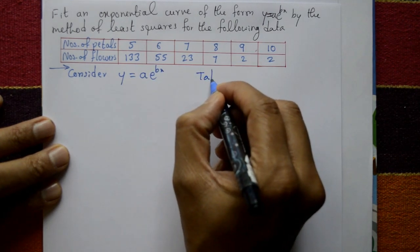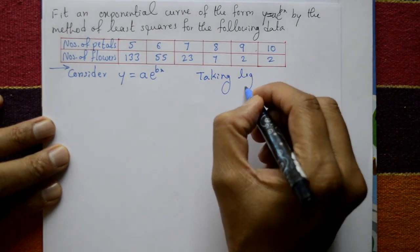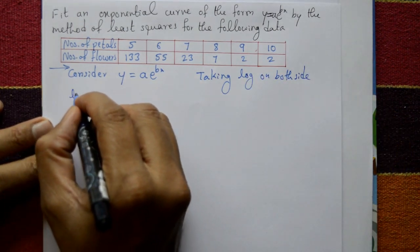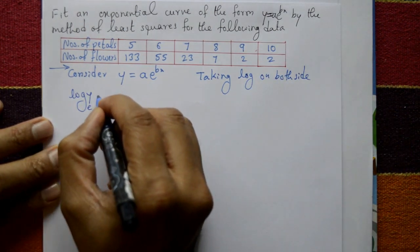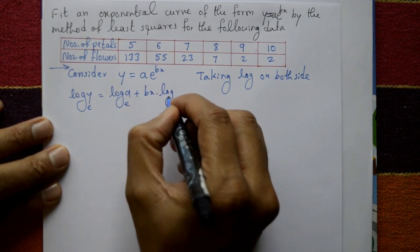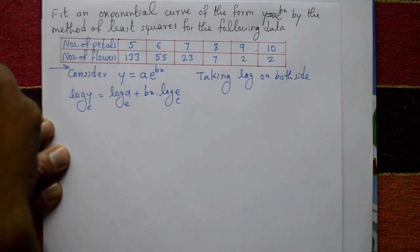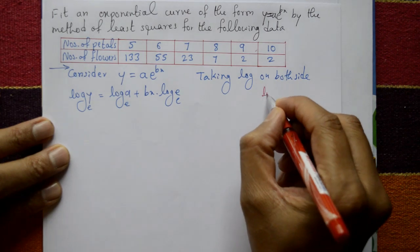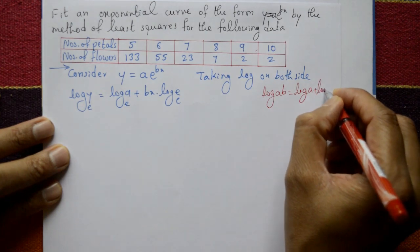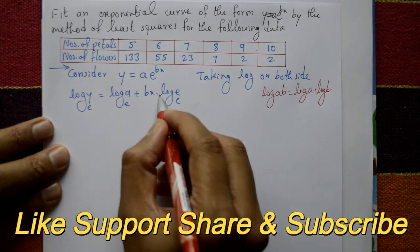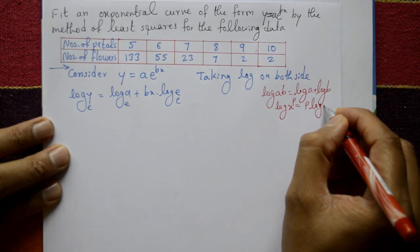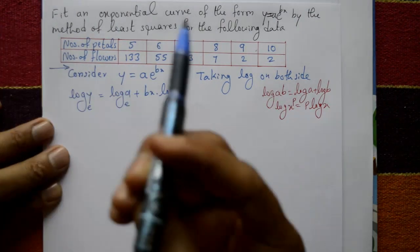Taking log on both sides: log y (base e) = log a (base e) + bx · log e (base e). Using the property log(ab) = log a + log b, and also the property log(x^p) = p · log x.